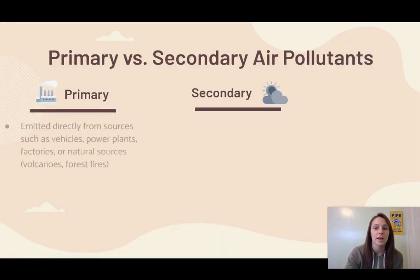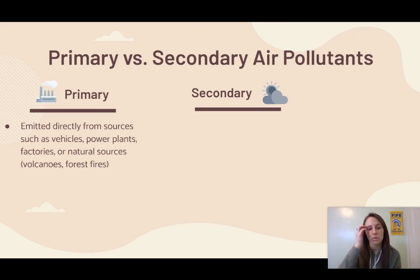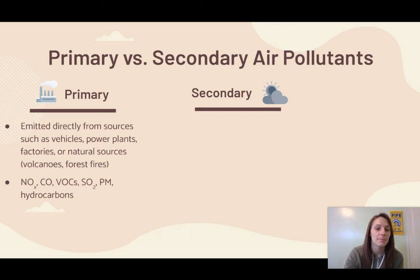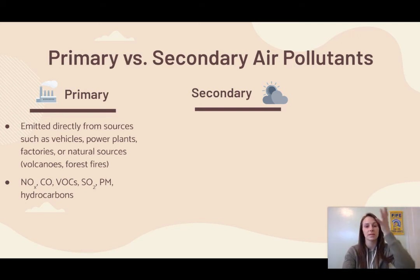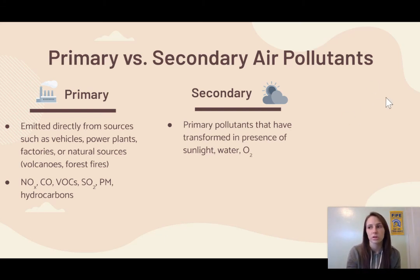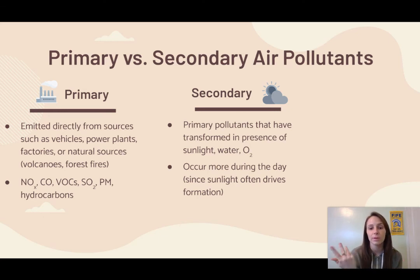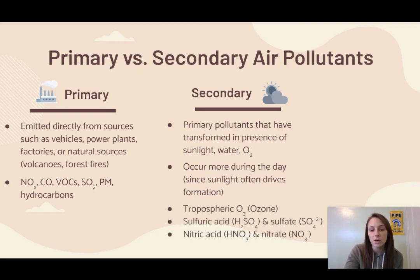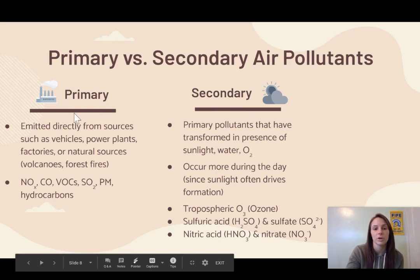Primary air pollutants are ones emitted directly from sources such as vehicles, power plants, factories, or natural sources like volcanoes and forest fires. Examples include NOx, carbon monoxide, sulfur dioxide, particulate matter, and hydrocarbons. Secondary air pollutants are ones that were primary pollutants transformed in the presence of sunlight, water, or oxygen once they get into the air. Secondary pollutants occur more during the day because sunlight often drives their formation. Examples include tropospheric ozone, sulfuric acid, sulfate, nitric acid, and nitrate.